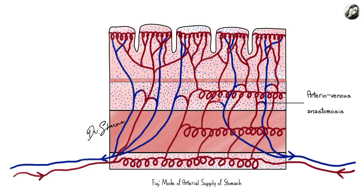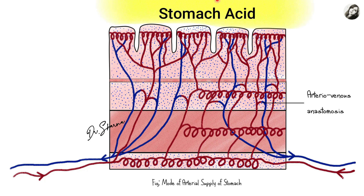Another interesting feature is the presence of arteriovenous anastomosis in the submucosal layer. These anastomotic channels allow blood to bypass the capillaries and flow directly from the arteries to the veins. However, in cases of persistent hyperacidity — persistent hyperchlorhydria — these channels dilate so blood is shunted into the veins without even reaching the capillary system. As a result, the surface epithelium becomes ischemic due to lack of capillary blood flow and becomes starved of oxygen, leading to ischemic damage. Combined with the stomach's acidic environment, the damaged tissue is highly susceptible to acidic digestion, further increasing the risk of gastric ulcers.